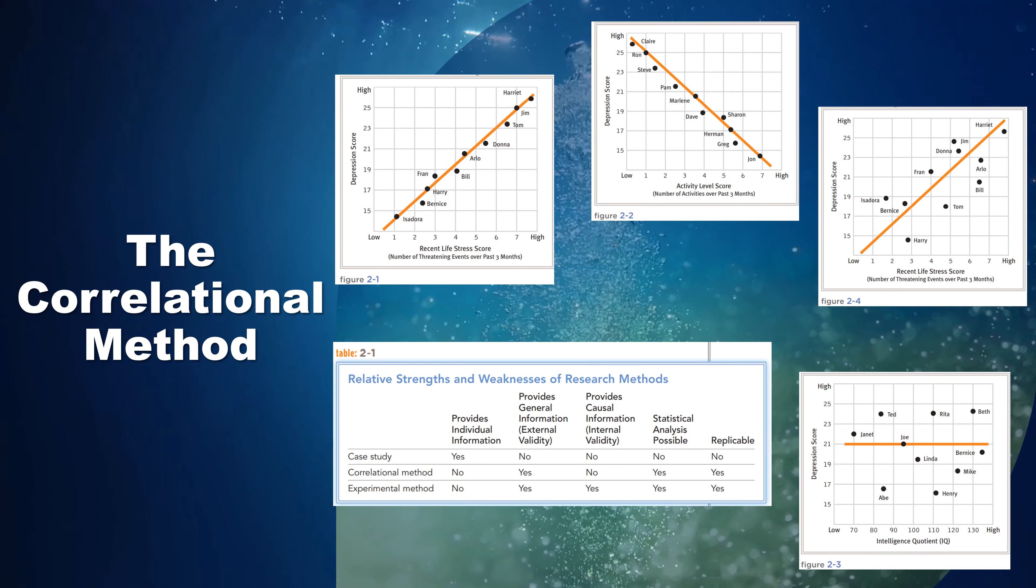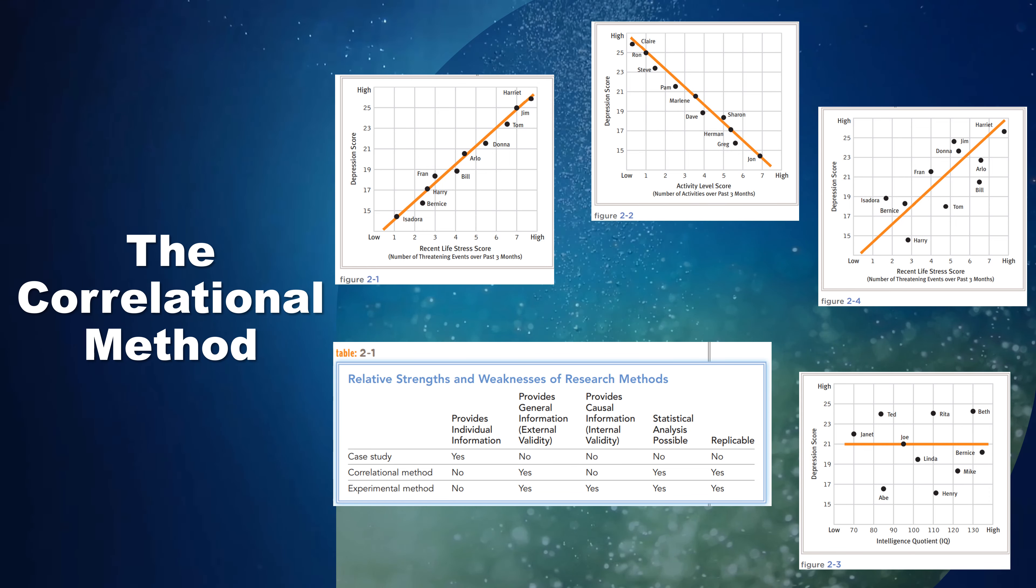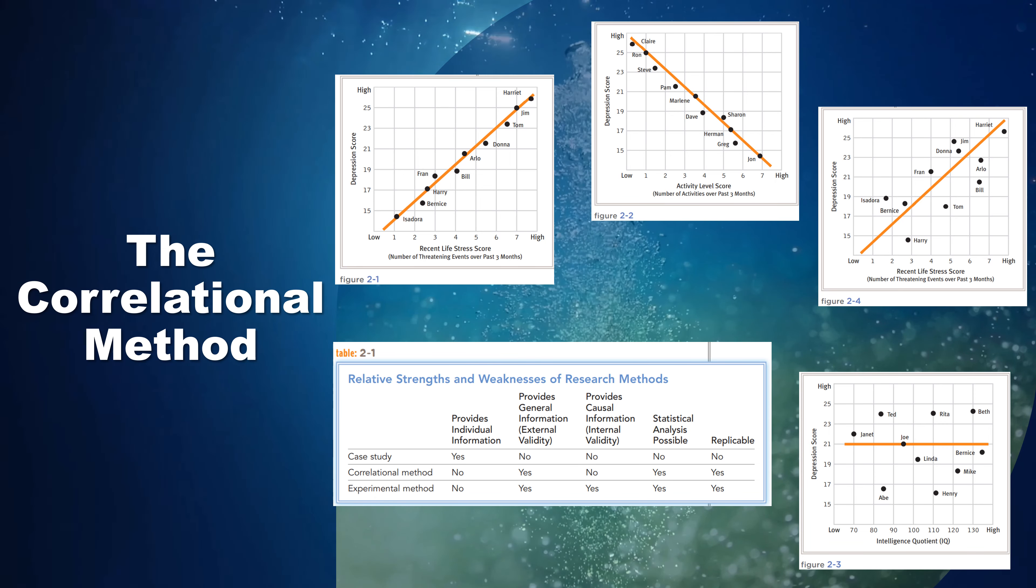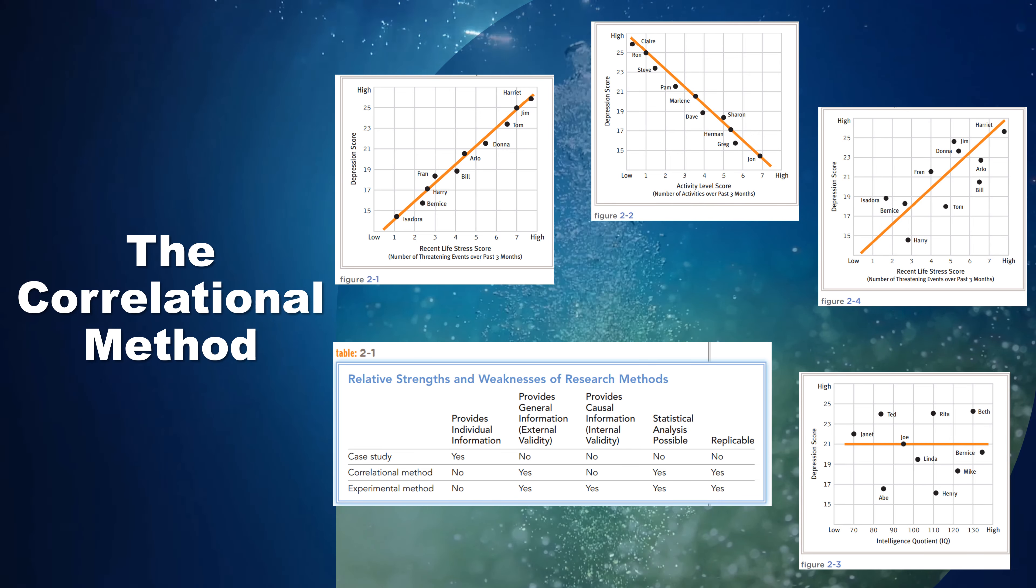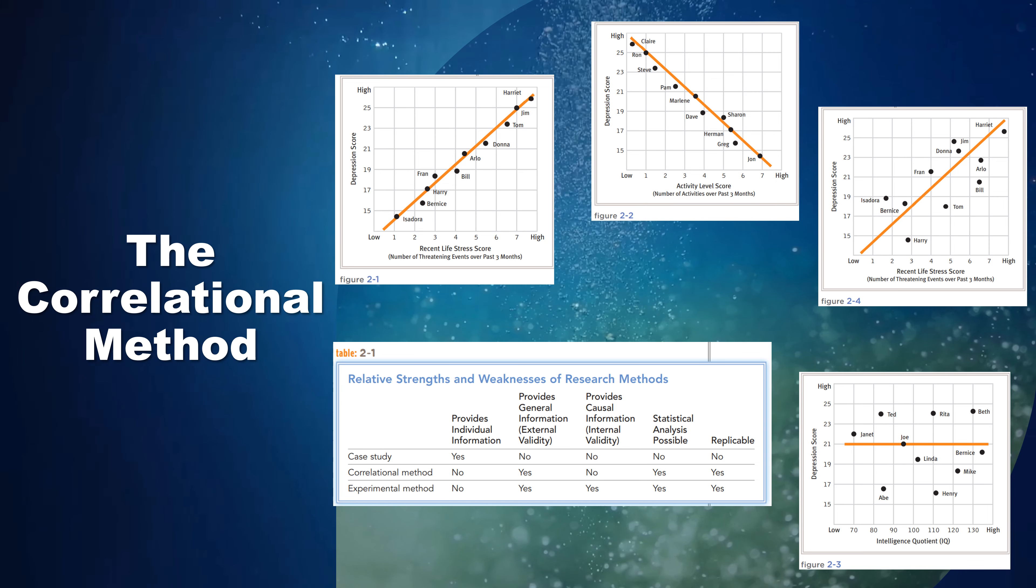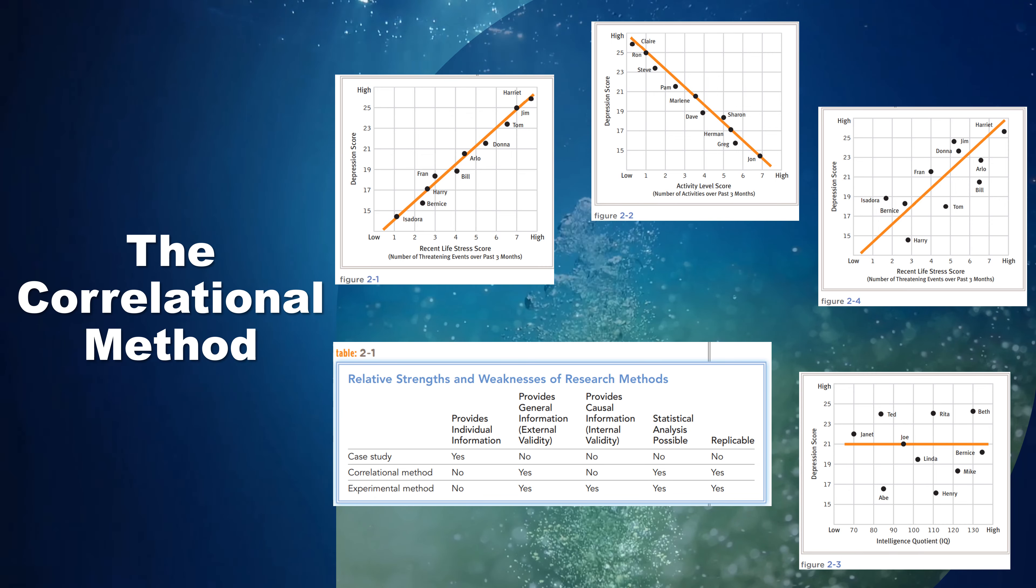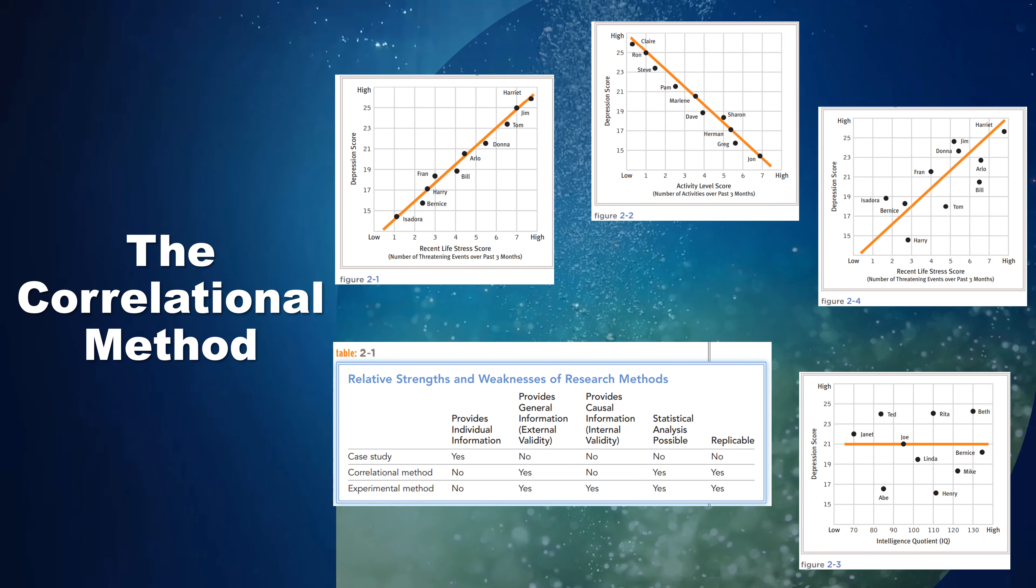When we look at the positive correlation found in many life stress studies, we may be tempted to conclude that increases in recent life stress cause people to feel more depressed. In fact, however, the two variables may be correlated for any one of three reasons: life stress may cause depression; depression may cause people to experience more life stress (for example, a depressive approach to life may cause people to perform poorly at work or may interfere with social relationships); or depression and life stress may each be caused by a third variable, such as financial problems.